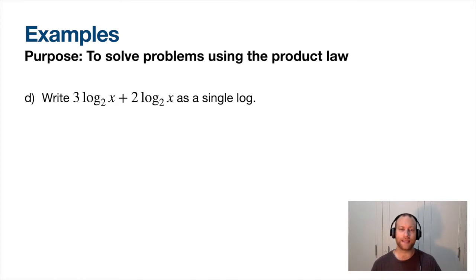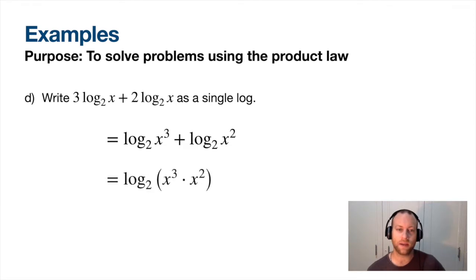Now I want to write this as a single log. So one way I can do this: put the powers up. They're both log base 2, so I can multiply those together inside of the log. And x to the power 3 times x squared is just simply x to the power 5. Some of you might have noticed I've got 3 log base 2 x's plus 2 log base 2 of x's. I could have just added those log base 2 of x's, gotten 5, which then becomes the power. So there's two ways you could have done this.